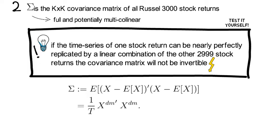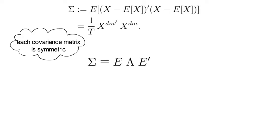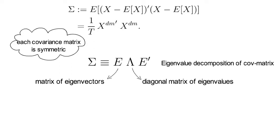By construction, each covariance matrix is symmetric. Hence it has the following eigenvalue decomposition, where E is the matrix of eigenvectors and lambda is the diagonal matrix of eigenvalues.